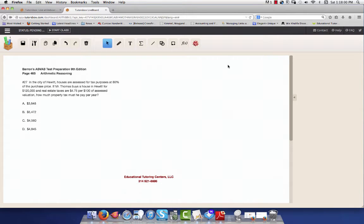Hello, this is Tamisha with Educational Tutoring Centers with an arithmetic reasoning problem in preparation for an ASVAB test. This problem says, in the city of Hewitt, houses are assessed for tax purposes at 80% of the purchase price. If Mr. Thomas buys a house in Hewitt for $120,000 and real estate taxes are $4.75 per $100 of assessed valuation, how much property tax must he pay each year?